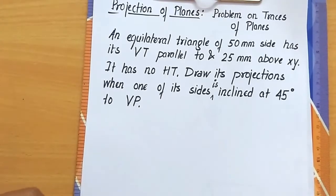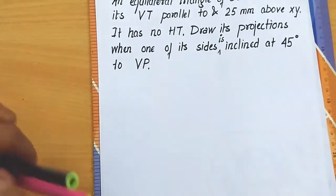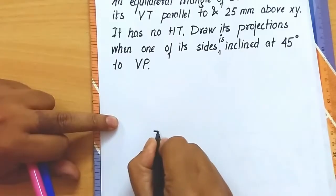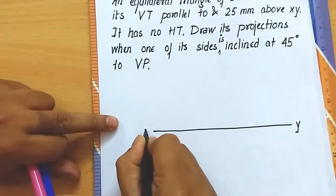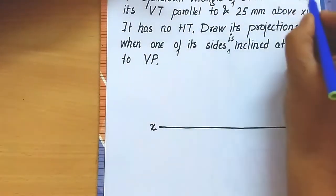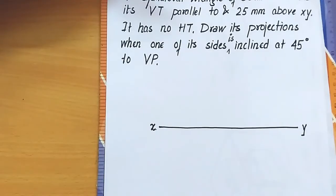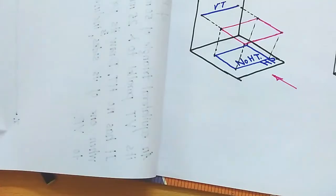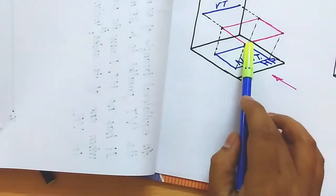Now let us switch back to this particular problem. I'll draw the XY line — here we have an XY line. This equilateral triangle has 50 mm sides and its vertical trace is parallel to and 25 mm above XY. The triangle is a plane and it has no HT. This means the triangle is placed absolutely parallel to the horizontal plane, and the true shape is evident from the top. So we can start by drawing the top view first.